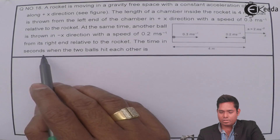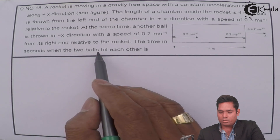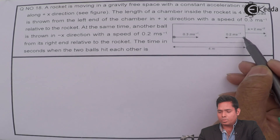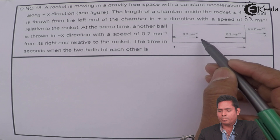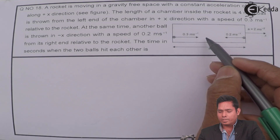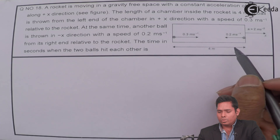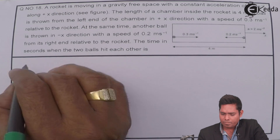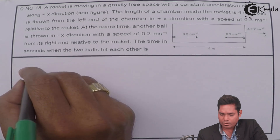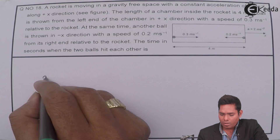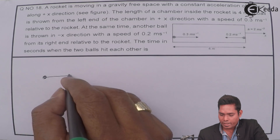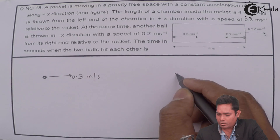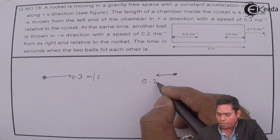The question asks: at what time in seconds will the two balls hit each other? The left ball moves towards the right and the right ball moves towards the left. We will solve this first by the relative velocity frame. The left ball is moving towards the right with 0.3 m/s and the other is moving with 0.2 m/s.